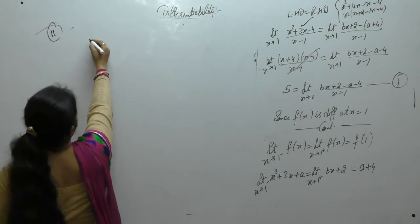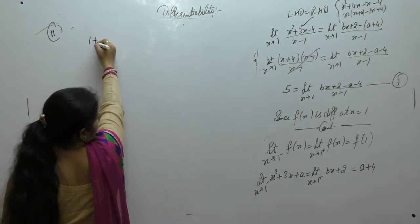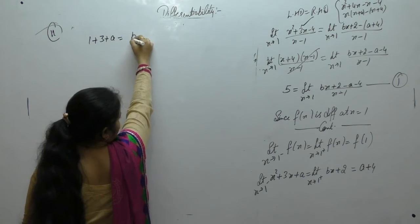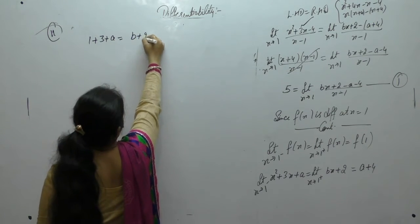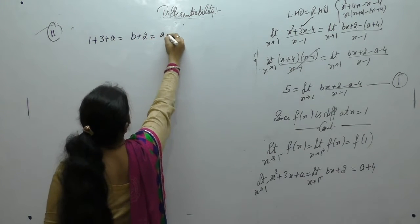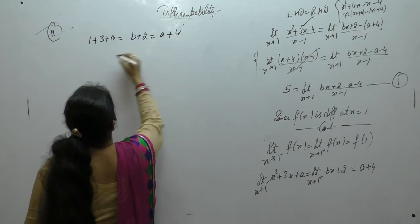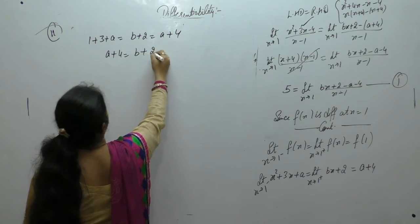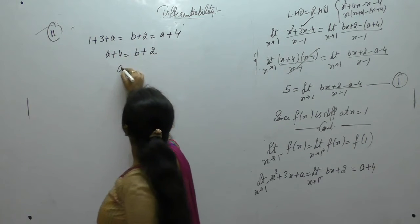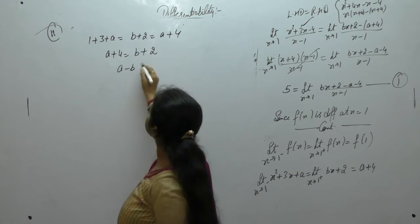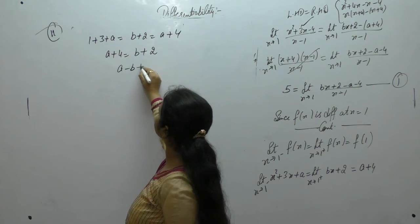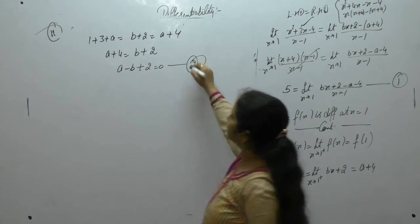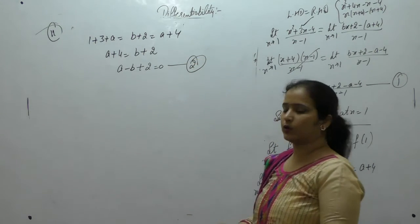Put the value: 1 plus 3 into 1 gives 1 plus a, and 1 into b plus 2. So a plus 4 is equal to b plus 2. We can write it as a minus b equals 4 minus 2, which is 2. Let this be equation 2.